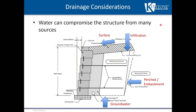Water can compromise a structure from many different sources. Water is also the number one enemy of retaining walls. What we're going to look at today is where those sources of water are and how we can prevent them from infiltrating the wall reinforced zone and stop the water penetration.